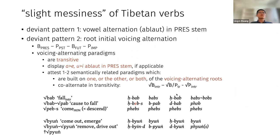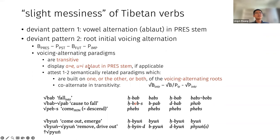Looking deeper at deviant pattern two: when you have a voice-alternating paradigm — voiced in the present and future, voiceless in the past and imperative — you get a cluster of properties. First, these verbs are always transitive. Second, they display ablaut in the present stem if applicable. Third — and this is important — these voice-alternating paradigms have associated related paradigms built on one or both of the voice-alternating roots, and taken together these related paradigms co-alternate in transitivity.